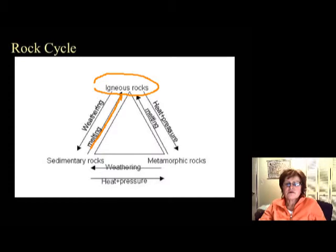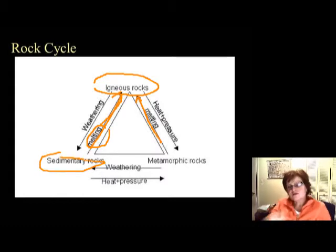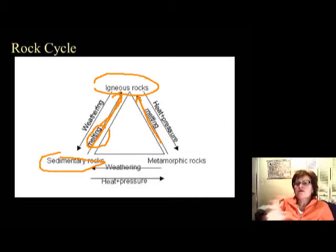So if you have these arrows, the melting keyword always has to go toward the igneous rocks. On the other side, for metamorphic rocks, when they melt, they will become igneous rocks. The next one would be sedimentary rocks, and the keyword I use for sedimentary rocks is weathering, because every rock by weathering will become a sedimentary rock.